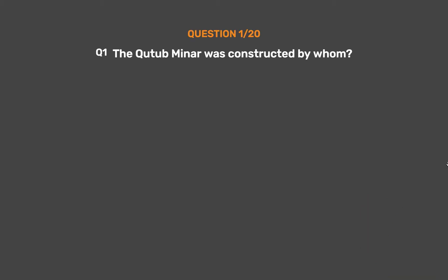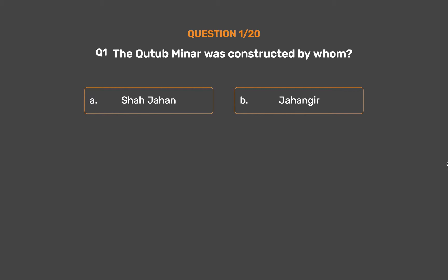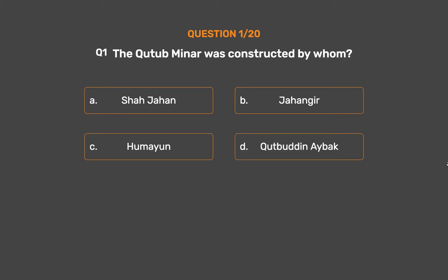Question No. 1: The Qutub Minar was constructed by whom? Option A: Shah Jahan. Option B: Jahangir. Option C: Humayun. Option D: Qutubuddin Aibak.